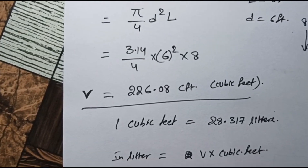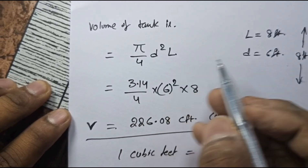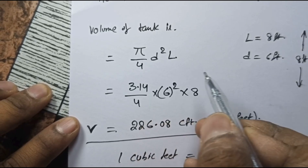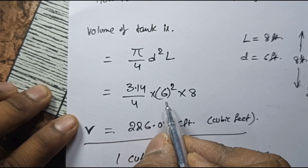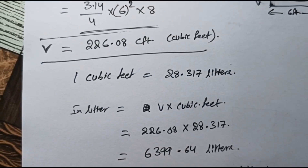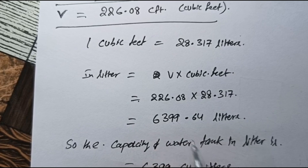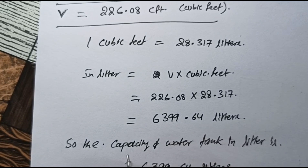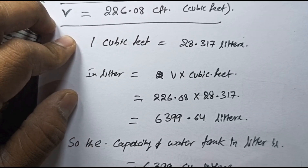Let's verify once again. We calculated the volume of the water tank where the diameter is 6 feet. Using the formula, we got the volume as 226.08 cubic feet. Since one cubic foot equals 28.317 liters, multiplying volume by 28.317 gave us 6,399.64 liters — that is the capacity of the water tank. By this method, we can calculate the capacity of any tank.